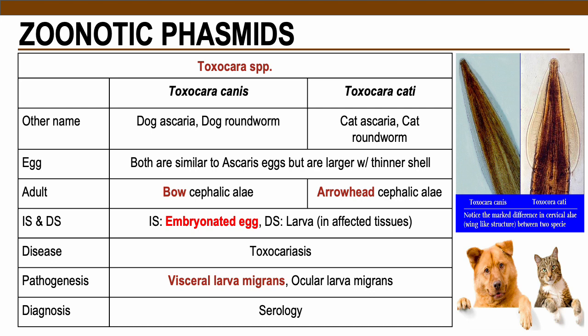Let's start first with the most common or clinically significant zoonotic nematodes, and that would be your Toxocara species. We have two important parasites under this family: Toxocara canis and Toxocara cati.